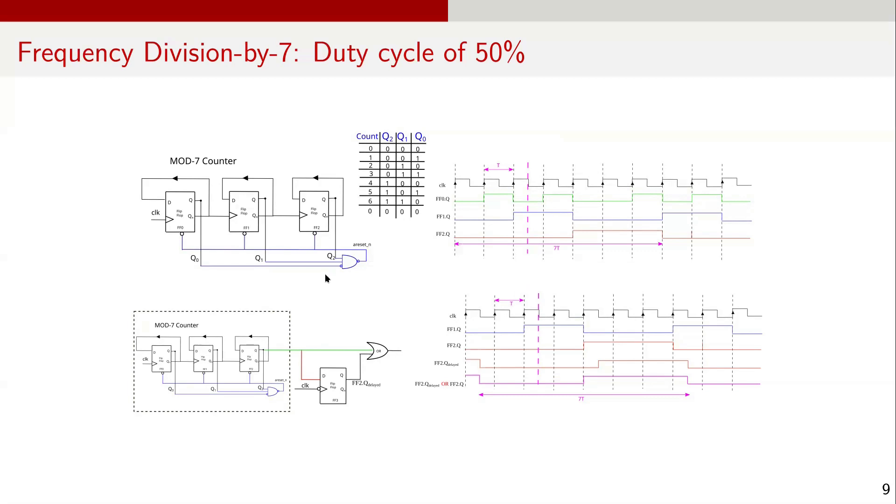To achieve this, we first design a mod 7 counter, an asynchronous counter with 3 D flip-flops that can normally count up from 0 to 7. To make it mod 7, we reset the flip-flops when the count reaches 6, that is when FF0Q is 0, FF1Q is 1 and FF2Q is 1.